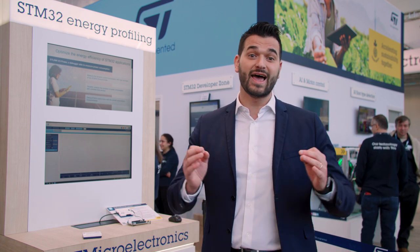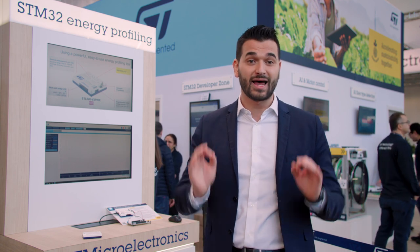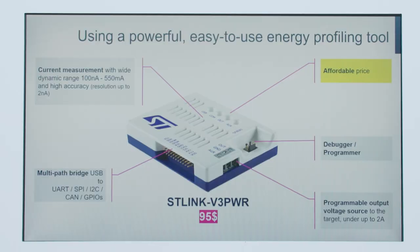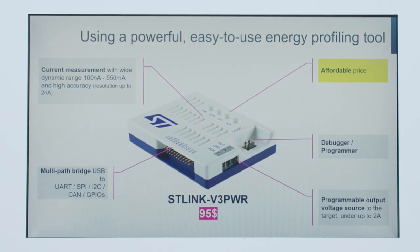This feature makes it easier to further optimize the energy efficiency of your application. So, in conclusion, the ST-Link V3 Power is our new debugger, programmer, energy profiler, and programmable voltage supply that enables you to measure, analyze, and optimize the energy profile of any STM32-based application. Last but not least, this new ST-Link tool is available now at a very affordable price of $95. For more information, check out ST.com/ST-Link-V3-Power.